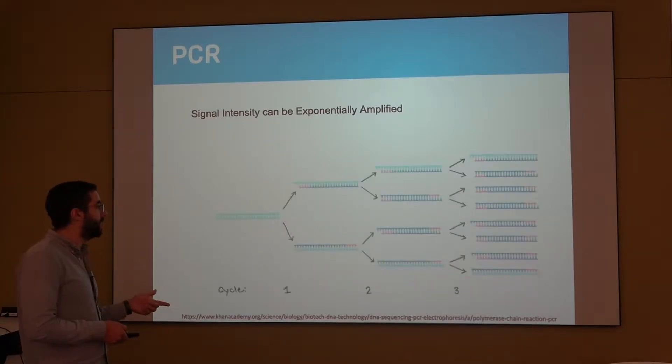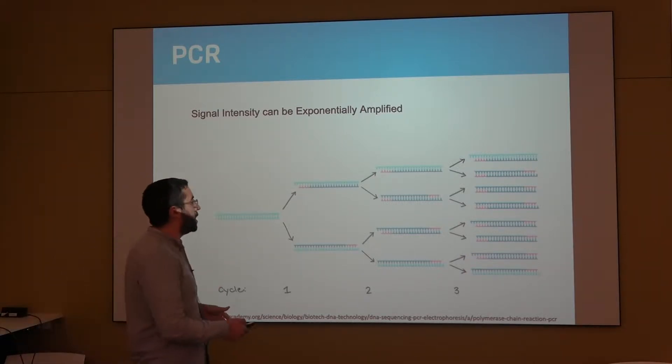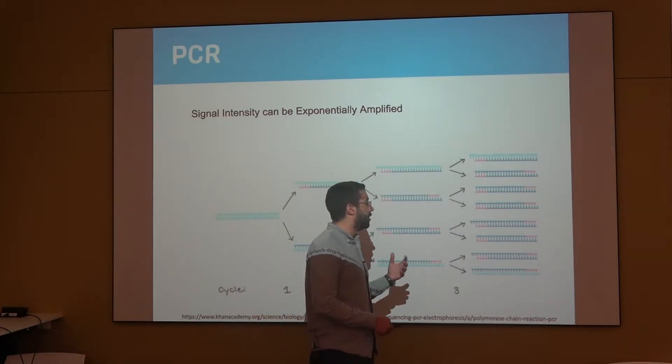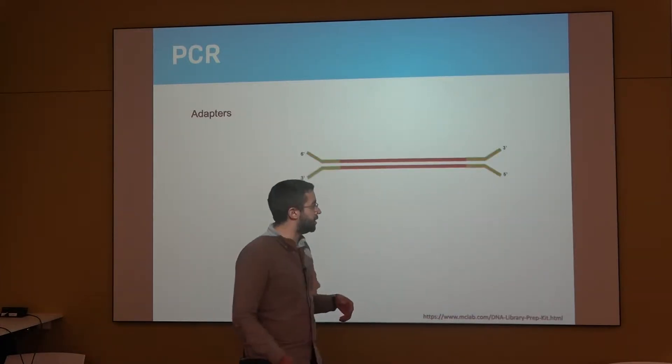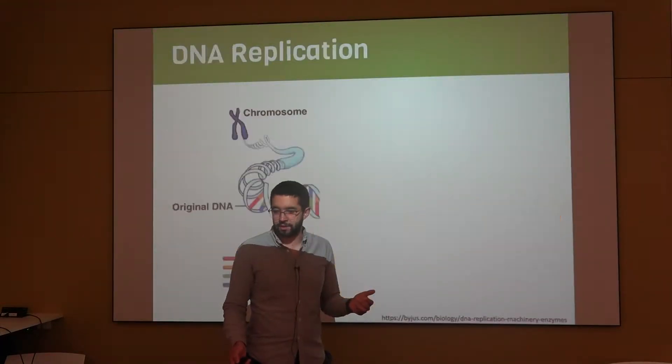Now if you repeat the cycle you end up with four, and if you repeat it's eight, and it simply increases exponentially. And so the amount of templates that you're going to have for reading your image at the end is going to be a lot increased.